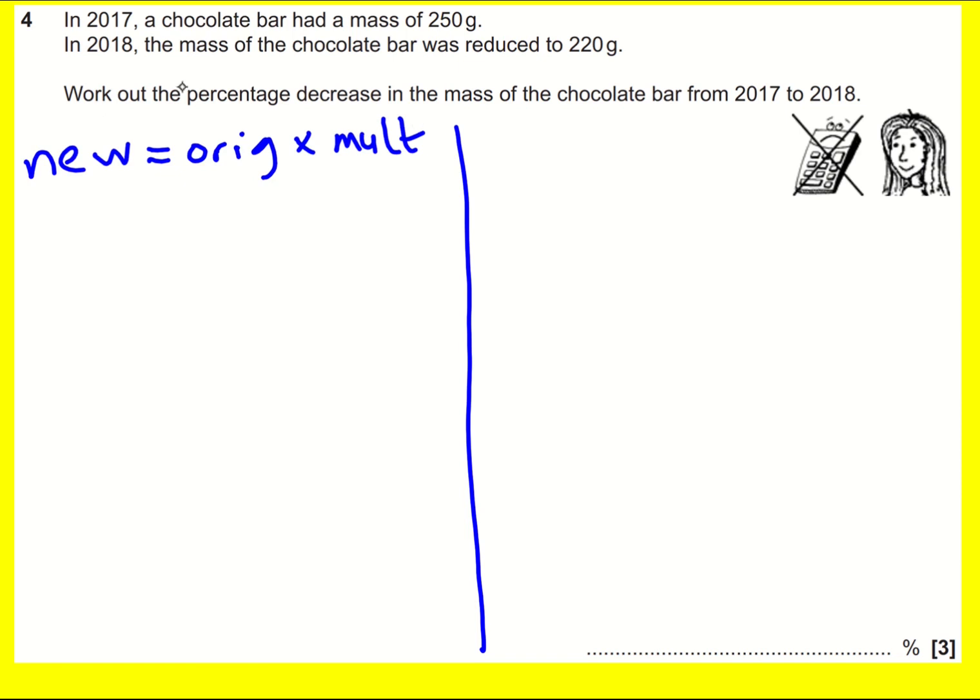In 2017, that's the old value, we had 250 grams, and then it was reduced to 220 grams. What is the multiplier? We can get it by rearranging: the multiplier equals 220 divided by 250.